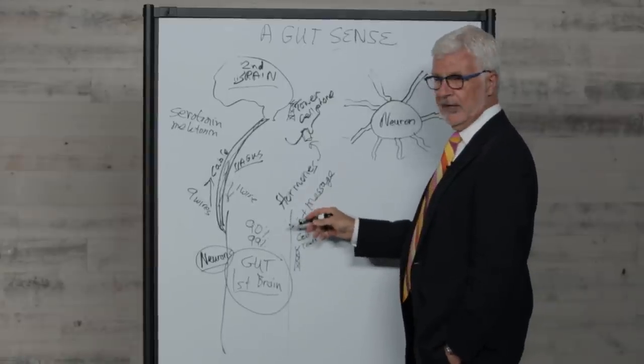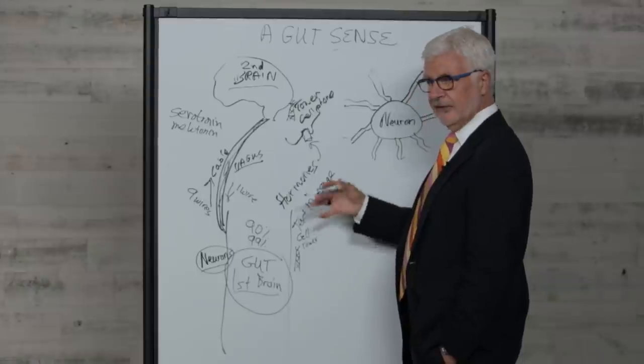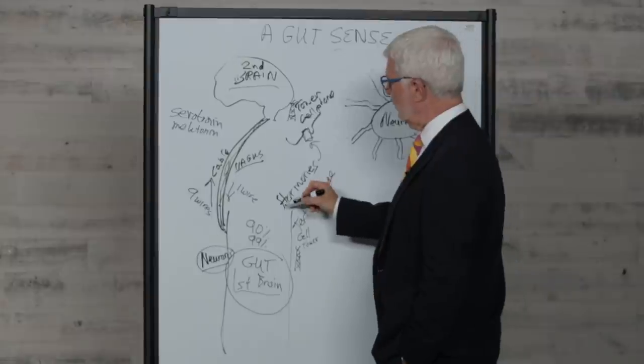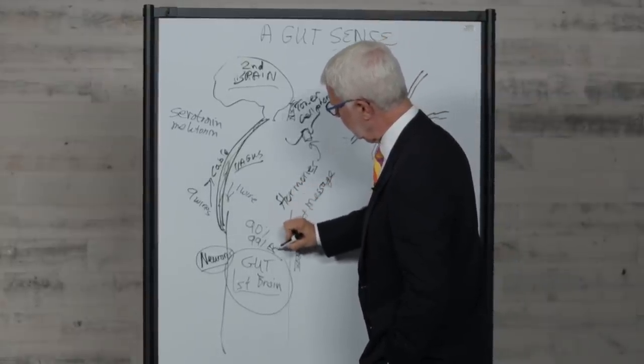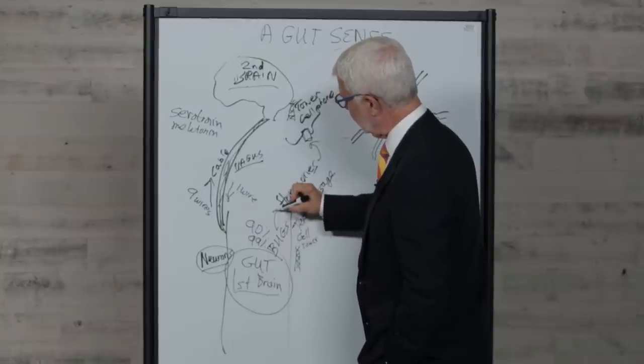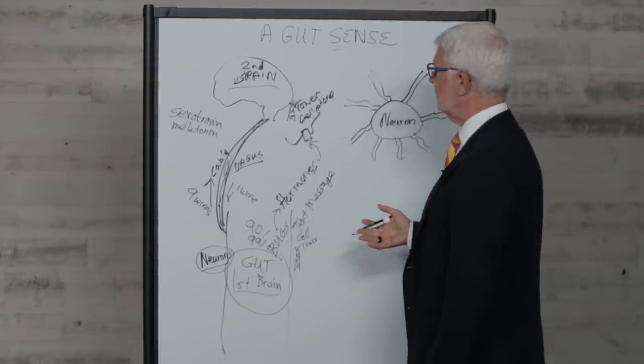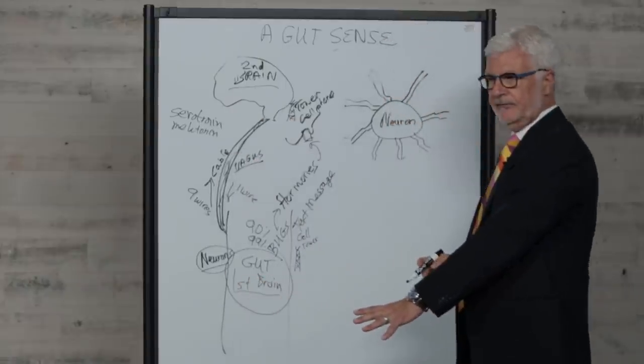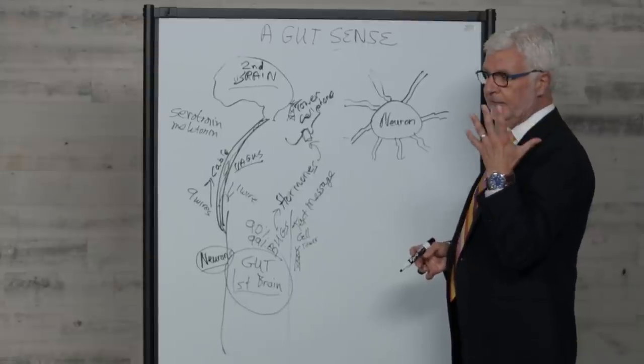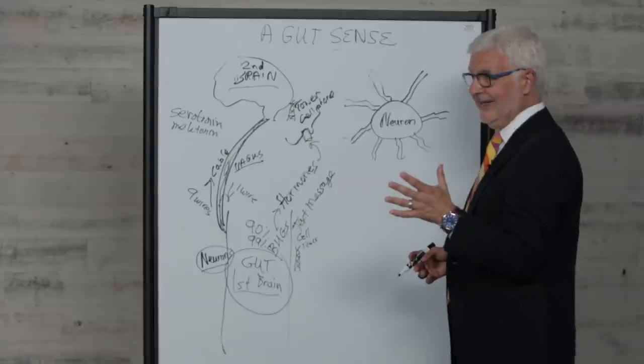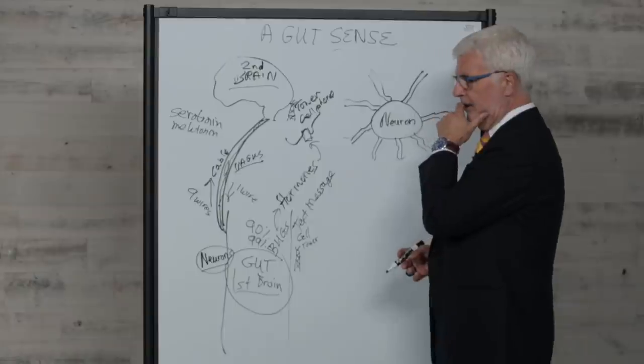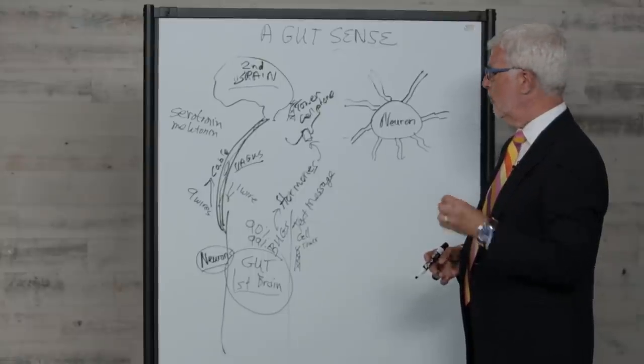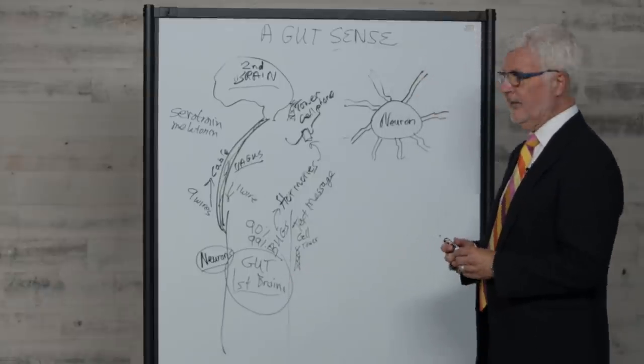With each passing year, we're realizing it's actually the bugs in our gut that are responsible for making many of the hormones that communicate to our brain. Rather than a top-down information system of the brain being in control of us, it's actually at least equal between the gut and the brain, and I think the first brain down in the gut is probably the big winner long-term.